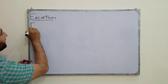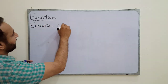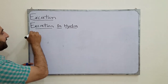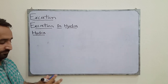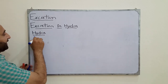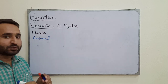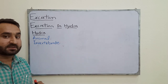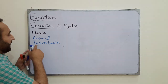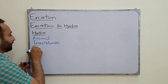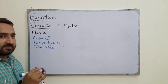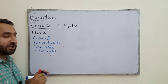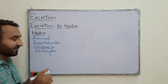Today's topic is excretion in hydra and planaria. First, we discuss excretion in hydra. Hydra is an animal belonging to kingdom Animalia. It is an invertebrate animal, meaning it does not have a vertebral column as the central support of the body. Hydra belongs to phylum Cnidaria. The word Cnidaria means it bears cnidocytes — the stinging cells.